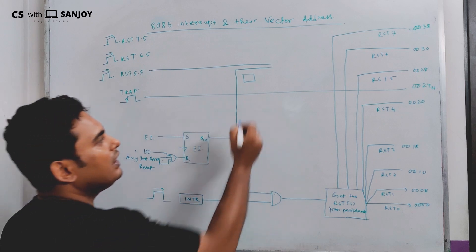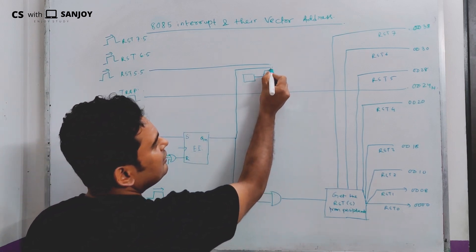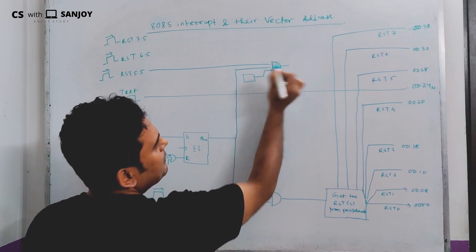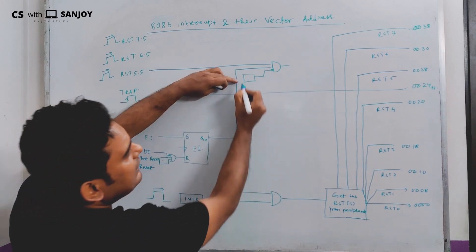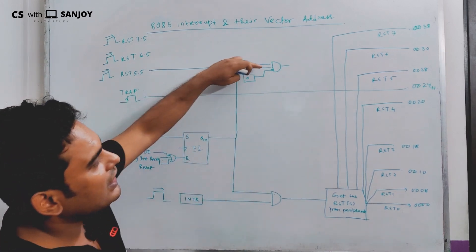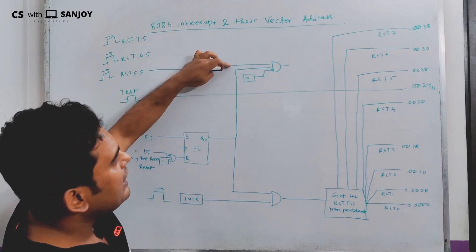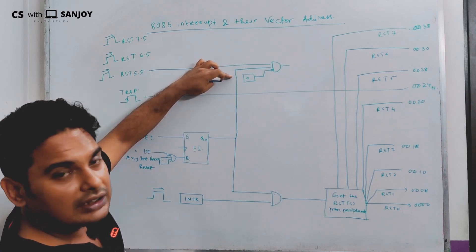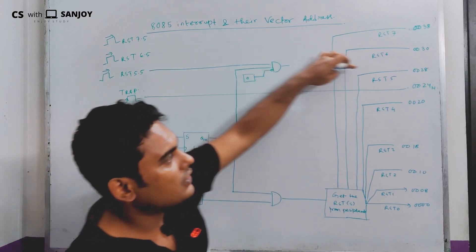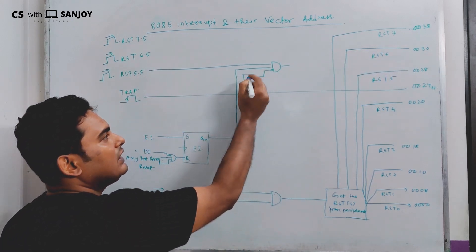The mask bit is connected through an inverter and an AND gate. If the mask bit is 0, the interrupt is allowed. If the mask bit is 1, the interrupt is blocked — anything AND 0 is 0.